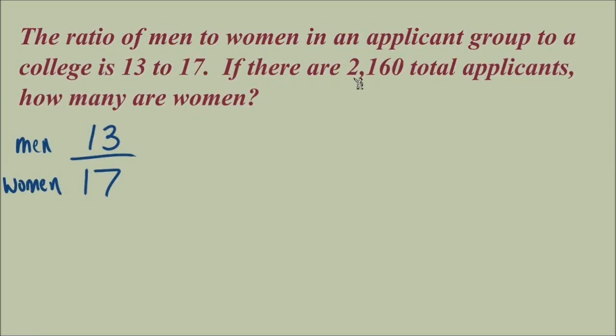My advice in this case is to look at what we would use in our second ratio. This last sentence, if there are 2,160 total applicants, how many are women? This tells me I should use a ratio that has women in one place and total applicants in the other. Perhaps women in the numerator, total applicants in the denominator. I know I'll be able to use the 2,160 in the denominator here and an x for the women because that's what we're trying to find. But we still don't have our units matching up.